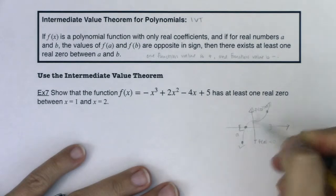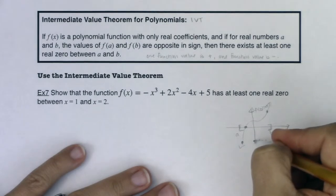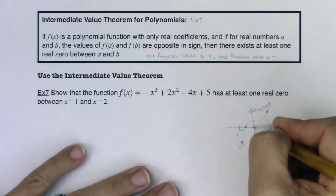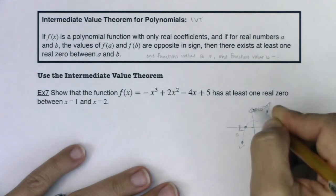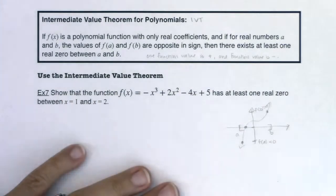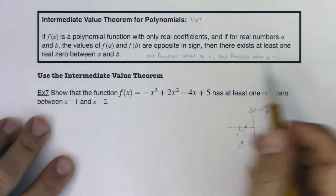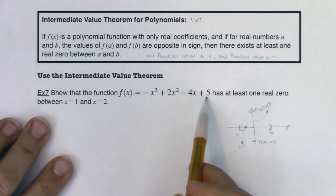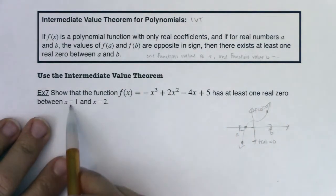And that's what the intermediate value theorem is saying, that between this negative number and this positive number, there was the number zero, it was intermediate between these two y values. And so I had to pass through the x-axis, meaning I had to have a real zero or an x-intercept. So with that, let's take a look at this. It says show that the function f(x) = -x³ + 2x² - 4x + 5 has at least one real zero between x equaling 1 and x equaling 2.